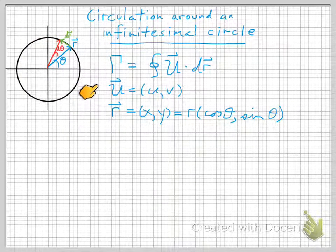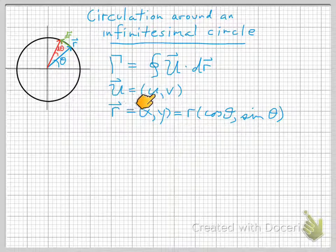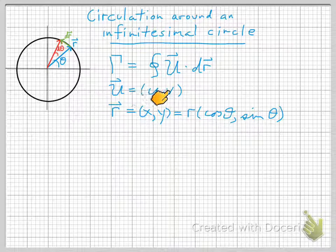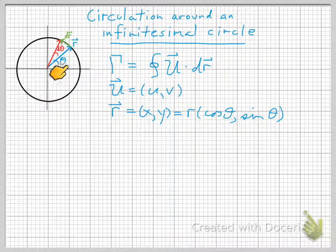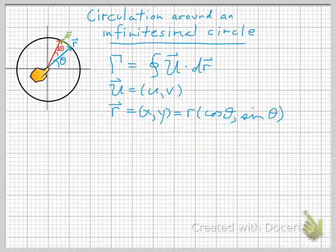We're working with a u that is written as two components, u and v, and a position vector r that has components x and y. And we'll also think about this in polar coordinates where x is r cos theta and y is r sin theta.